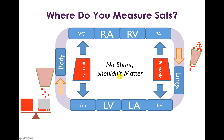If there's no shunt, looking at our railroad track, it shouldn't matter where you measure the oxygen saturation difference. You could measure the difference between the pulmonary artery and the pulmonary vein — how much oxygen gets picked up in the lungs — or equivalently measure how much oxygen gets dropped off in the body by measuring the aorta and vena cava saturation. If there's no shunt, those two methods of measurement should be exactly equivalent.